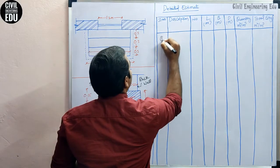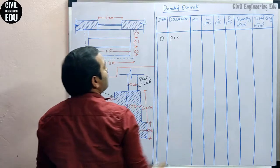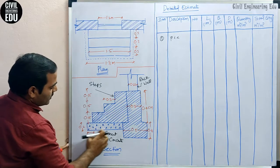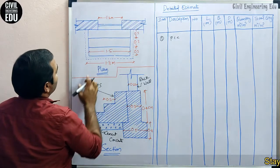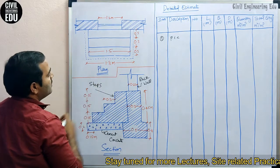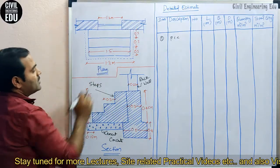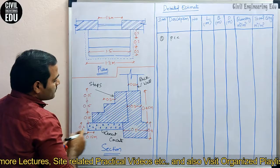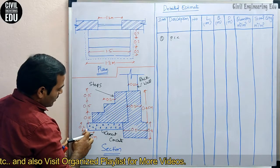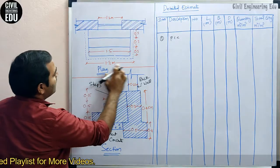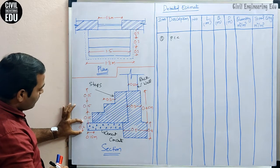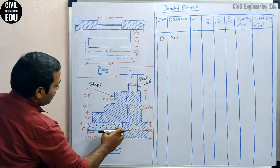First one is PCC — plain cement concrete — for which we are going to do the quantity calculation. How to find the length: if you see the plan from this end to this end, that is the PCC dimension. In the horizontal direction it is 1.8 meters, so we take that as length. Coming to the breadth, it will be from here to here. We need to take that distance as breadth, and this will be the thickness of PCC.